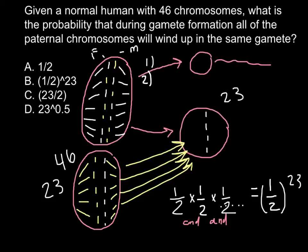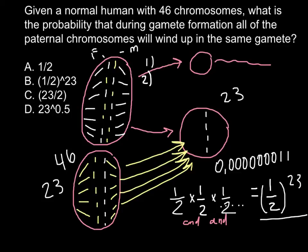So how small is this number? It is approximately 1.2 out of 10 million — roughly 1.2 × 10⁻⁷. This gives us more than 8 million possible combinations for how 23 pairs of chromosomes can be combined. And the correct answer is B. We can cross out the rest of the answers.